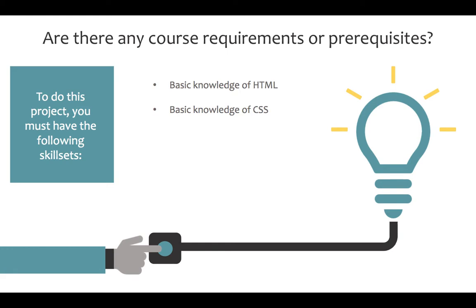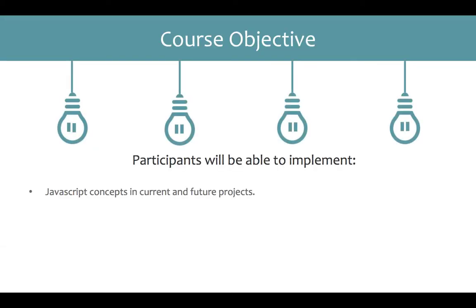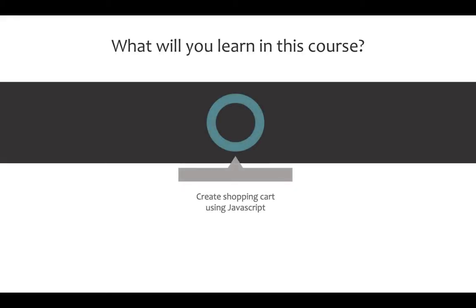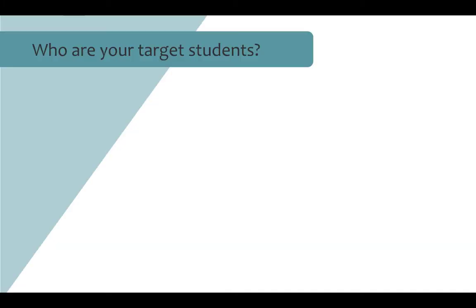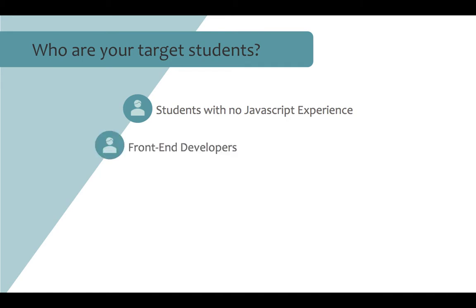The course objective is that participants will be able to implement JavaScript concepts in current and future projects. In this course you will be creating a shopping cart using vanilla JavaScript. The targeted students are: students with no JavaScript experience, front-end developers, and anyone who wants to learn JavaScript.